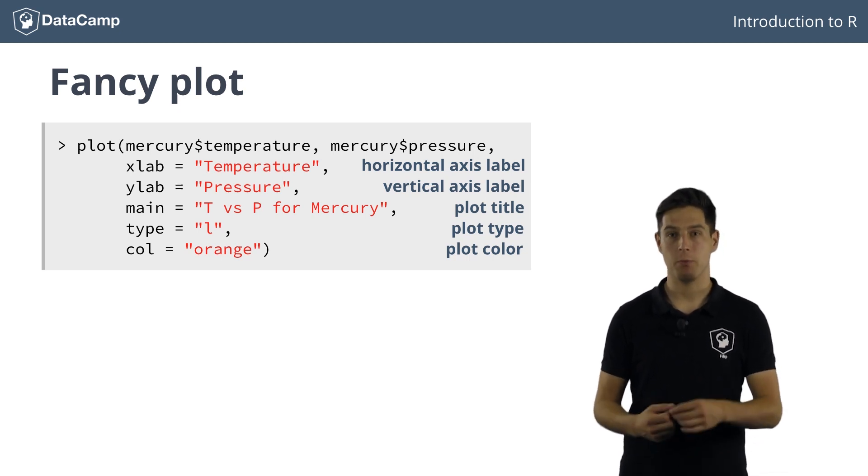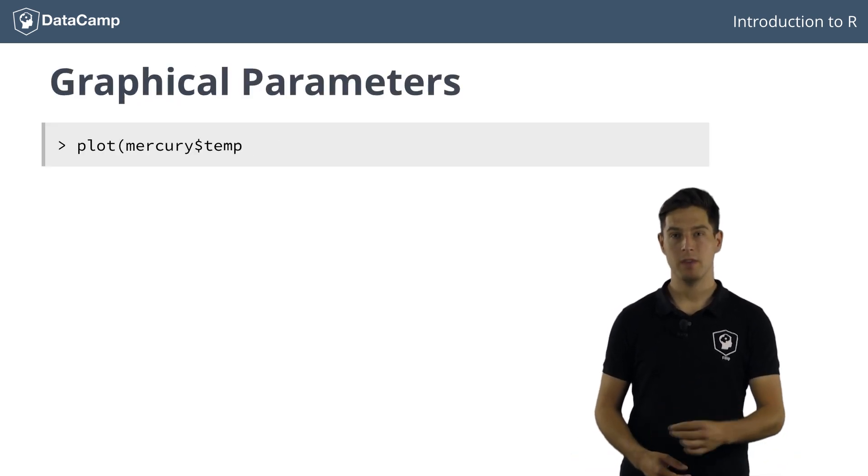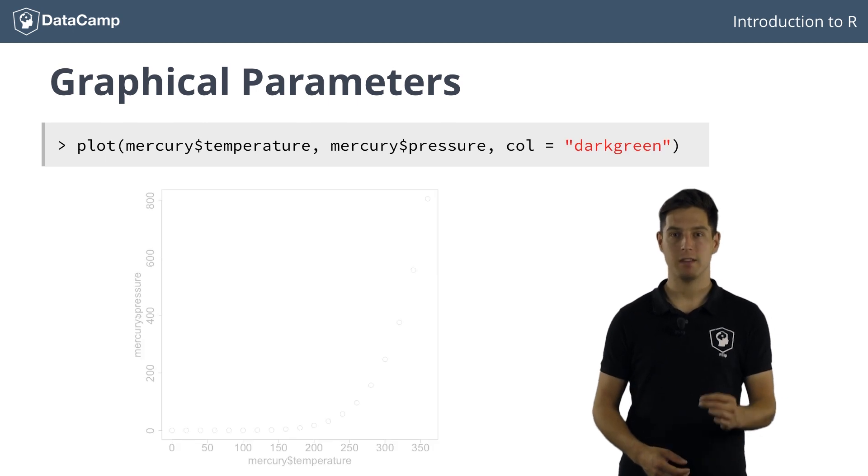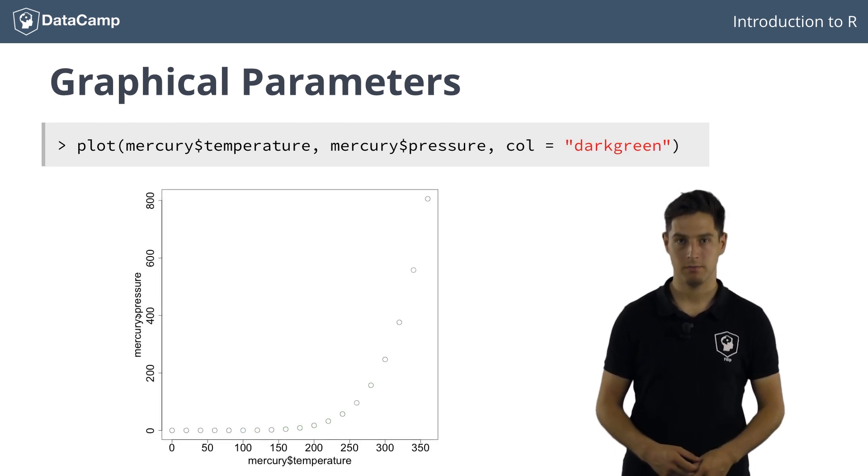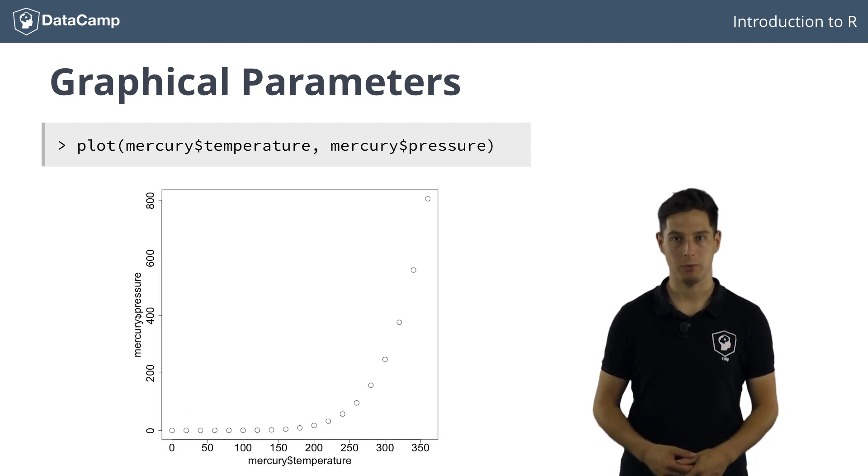You can specify these graphical parameters straight inside the plot function, as you did with col. In this case here, the graphical parameter only has an effect on this specific graph. If you now plot the same graph without the col argument, the green color is not there anymore.